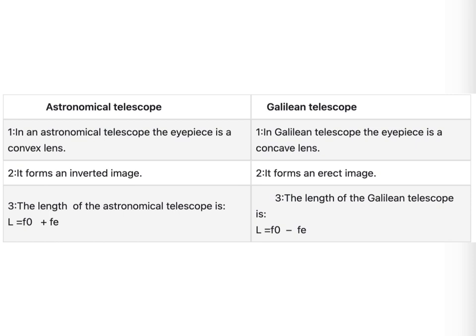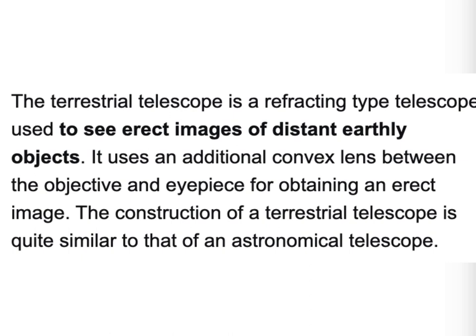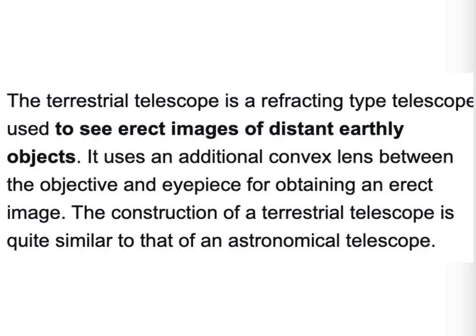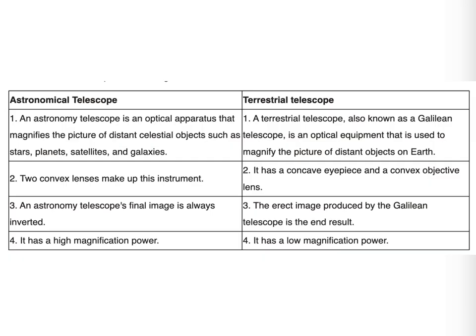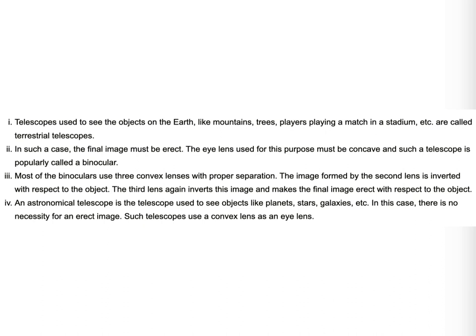There is something called the terrestrial telescope. This particular one has three lenses — three converging lenses — with the additional or middle lens regarded as an inverting lens. The third one added is called the inverting lens. This terrestrial telescope can be used on Earth, but it is not cheap to make because of its big size — it is longer and heavier than the other types of telescope.